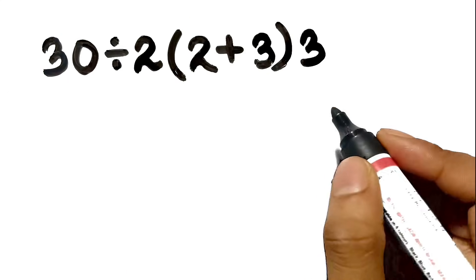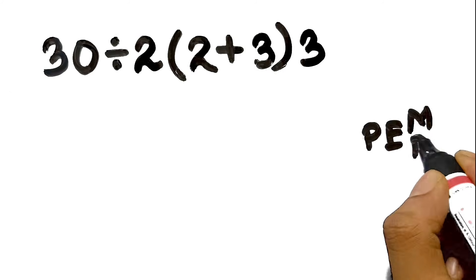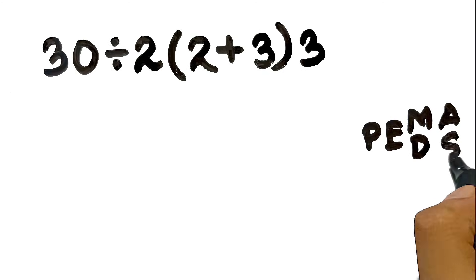Now, back to the problem. The rule says first we have to do parenthesis, then exponents, then multiplication or division, and finally addition or subtraction.